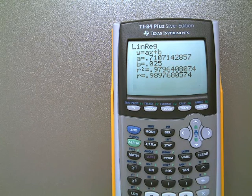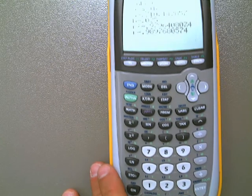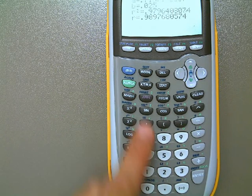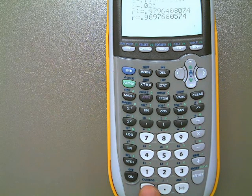The thing you need to do then is go to 2nd, Catalog, which is the 0 button, 2nd, and then the Catalog button right here.